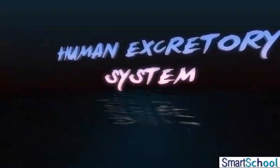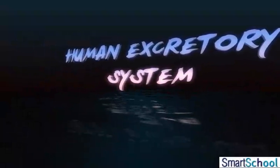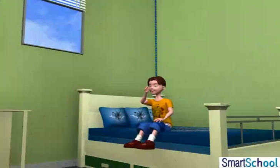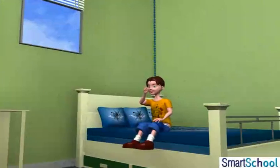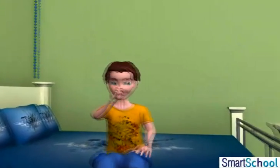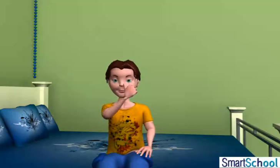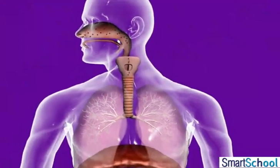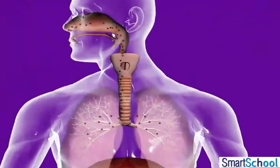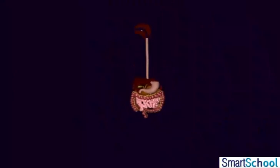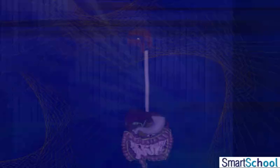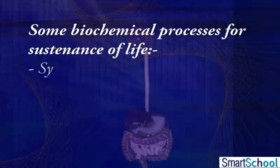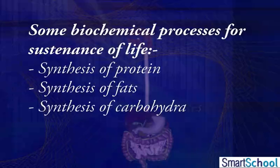Human Excretory System. For sustenance and maintenance of an organism, various life processes must go on at all times. These processes involve numerous biochemical reactions such as synthesis of proteins, fats, carbohydrates, hormones, etc.